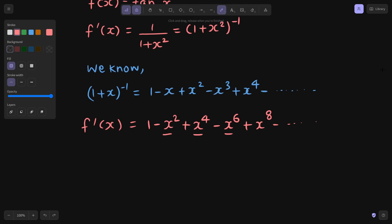Now let's move forward because now game is easy for us, because even for x power n, someone asks you find the derivative of x power 1000, you will happily say 1000 x power 999. So f double dash x, if I calculate from here, that will be derivative of 1 is 0, derivative of x square is 2x, derivative of x power 4 is 4x³, minus 6x⁵ plus 8x⁷.